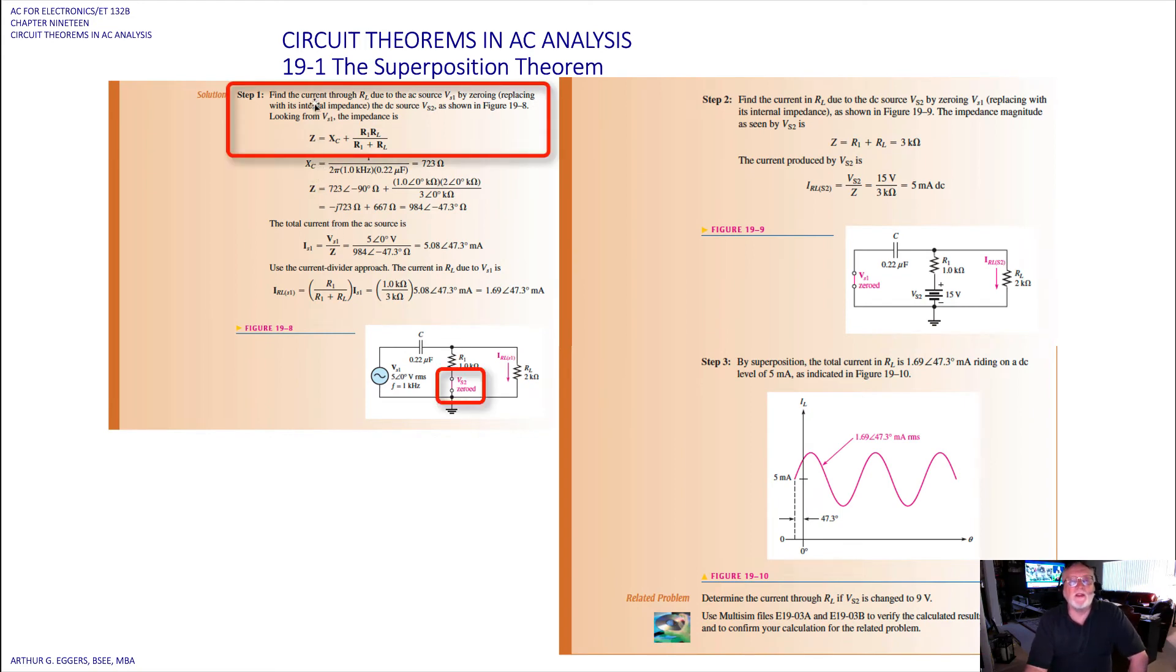So to find the current then through the load due to the AC source, VS1 then is zeroed, replaced by its internal impedance, and the DC source as shown. So looking from voltage source 1, then we've zeroed out voltage source 2. So that source is in essence just a path to ground for the resistor R1. We have total impedance then is equal to the capacitive reactance plus the sum of R1 RL, or the product over the sum of R1 RL. So X sub C then becomes 723 ohms.